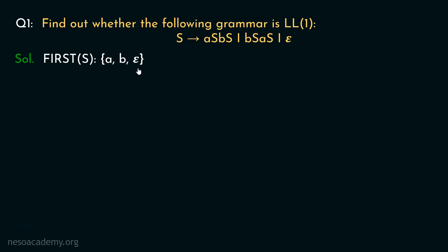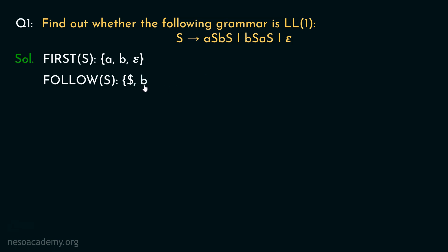Now let's find out FOLLOW(S). S is the only non-terminal and also the start symbol, so the dollar symbol is naturally included in FOLLOW(S). Considering the first production rule, S is followed by the terminal symbol small b, so we include b in FOLLOW(S). From the second production rule, S is followed by the terminal symbol small a, so we include small a in FOLLOW(S) as well.